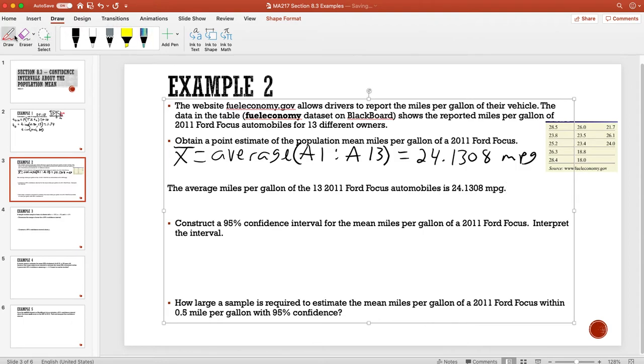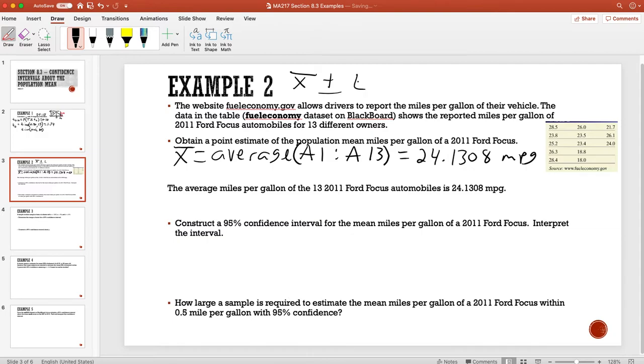Now for the 95% confidence interval for the mean miles per gallon, we want to interpret that interval. The confidence interval takes X-bar, adds and subtracts the critical T value at alpha divided by 2 times the standard error, which is sample standard deviation divided by the square root of n, the sample size.